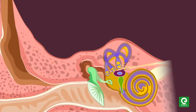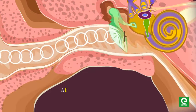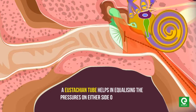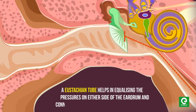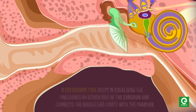The ear ossicles increase the efficiency of transmission of sound waves to the inner ear. A eustachian tube helps in equalizing the pressures on either side of the eardrum and connects the middle ear cavity with the pharynx. The inner ear...